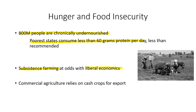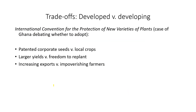It's hard to industrialize agriculture when most of the population relies on day-to-day subsistence farming. Commercial agriculture would rely on cash crops for export, which may not be the type of crops farmers are currently producing — requiring transition and government support. As an example, the International Convention for the Protection of New Varieties of Plants: Ghana was debating whether to adopt this, raising the question of whether to use patented corporate seeds or stay with local crops.